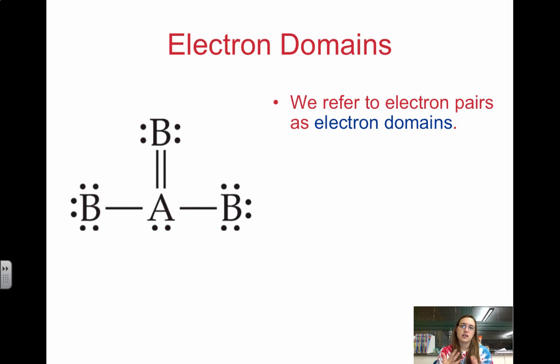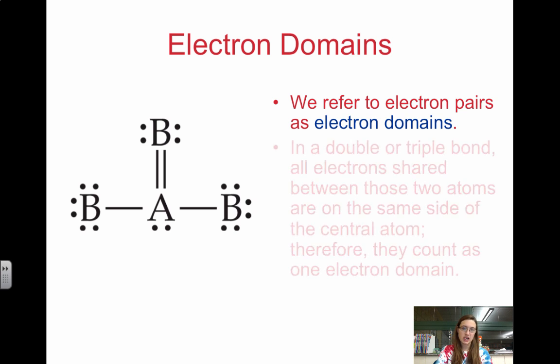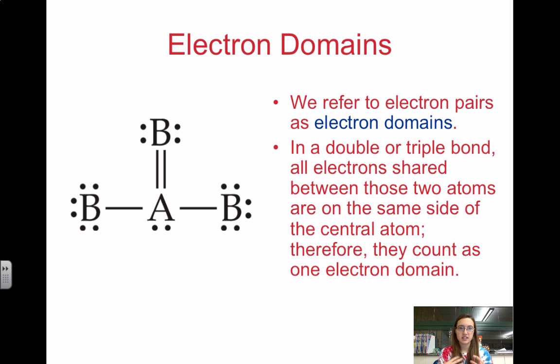First we're going to focus on these electron domains. We refer to electron pairs as electron domains. Essentially, this is wherever we can find electrons—it's a region where electrons can be located. For example, we're focusing on the central atom A. We have electrons to the left, electrons above, electrons to the right, and electrons below. That's actually four electron domains.